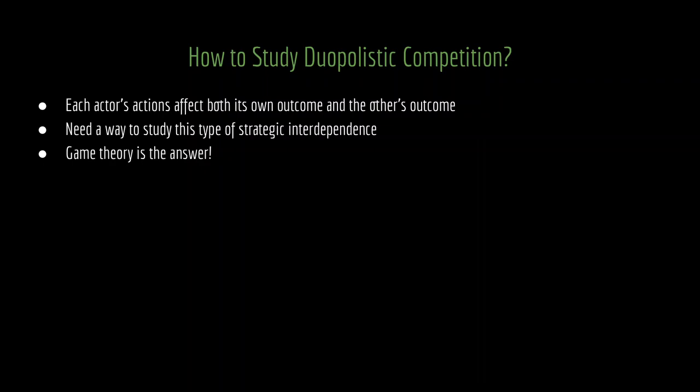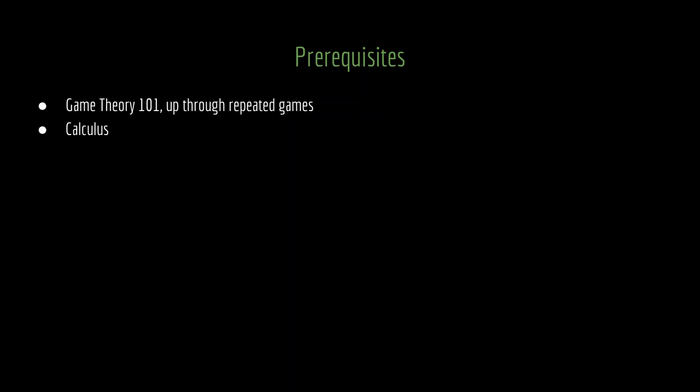This does mean that we have some prerequisites for this class — specifically two. One is having some pre-existing knowledge of game theory. If you have taken an introduction class to game theory, you're probably good enough. If you haven't, you can check Game Theory 101 up through repeated games — I'll leave a note in the description of this video to allow you access to that course. The other thing you need is calculus, specifically multivariate calculus. We're trying to optimize utility functions: two firms each choosing something, perhaps how much to produce. The way that you optimize utility functions is through calculus, so you need to know calculus to fully appreciate what's going on here.